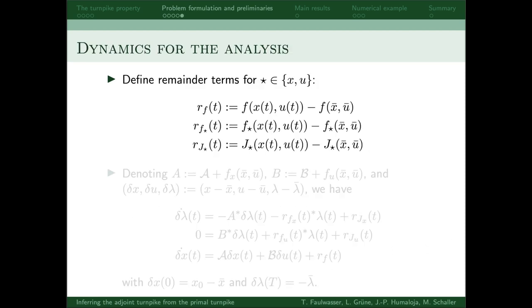The way we show that the adjoint state has the turnpike property is by deriving error dynamics based on the necessary optimality conditions. So if we define some remainder terms like this, we get dynamics for the distance from the turnpike like this.